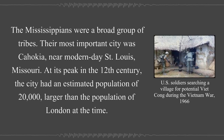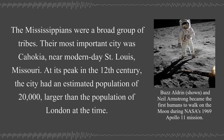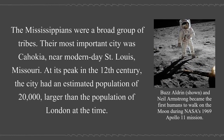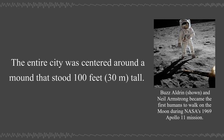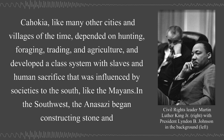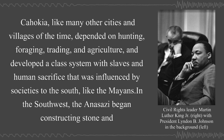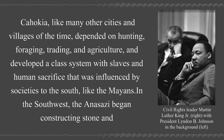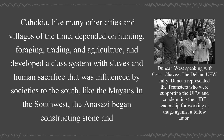At its peak in the 12th century, Cahokia had an estimated population of 20,000, larger than the population of London at the time. The entire city was centered around a mound that stood 100 feet (30 m) tall. Cahokia, like many other cities and villages of the time, depended on hunting, foraging, trading, and agriculture, and developed a class system with slaves and human sacrifice that was influenced by societies to the south, like the Mayans.